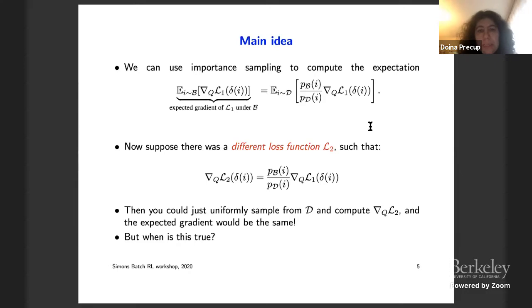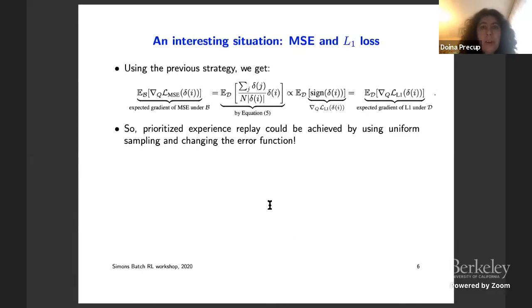And so we can do importance sampling on the gradient, and if we have access to P of B and P of D, then we can do these corrections. And, of course, we can compute these expectations by sampling as well. So the intuition in this paper is that in some cases we can replace the content of the second expectation by a gradient of a different loss function, L2. And so if we had a way for the gradient of L2 to match these importance sample corrected gradients of L1, then we could actually just do sampling from D and compute this gradient with respect to loss L2 and everything would be good.